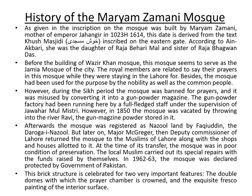The mosque was built by Mariam Zamani, mother of Emperor Jahangir, in 1023 A.H. or 1614 AD. This date is derived from the chronogram 'Khush Masjidi' inscribed on the eastern gate. According to historical sources, she was the daughter of Raja Biharimal and sister of Raja Bhagwan Das. Before the building of Vazir Khan Mosque, this mosque served as the Jama Masjid of the city. The royal members used to say their prayers here while staying in the Lahore Fort, and it was used by the nobility as well as common people.